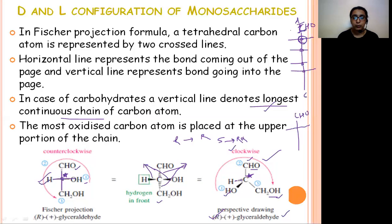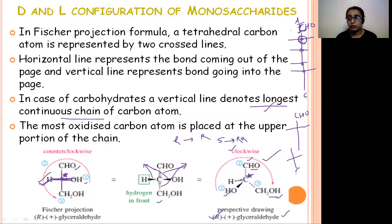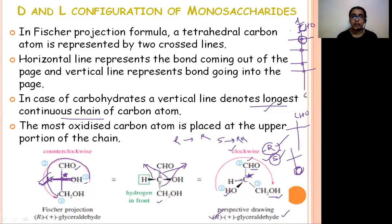Here the lowest priority group H is at the horizontal end. So when the lowest priority group is at the horizontal end and rotation is counterclockwise, it is R. If clockwise, it is S. But if the lowest priority group is at the vertical end, then clockwise is R and anticlockwise is S. In this case, since H is at the horizontal end and rotation is counterclockwise, the configuration is R.